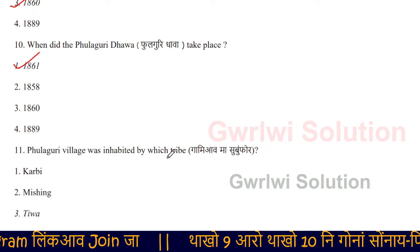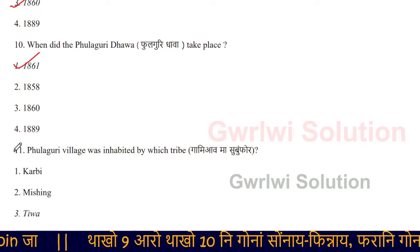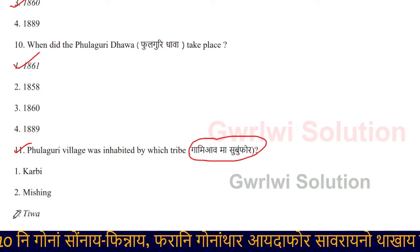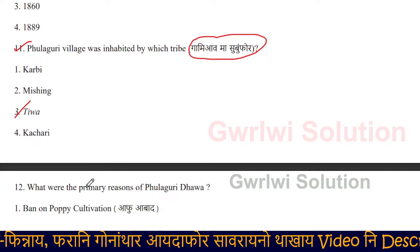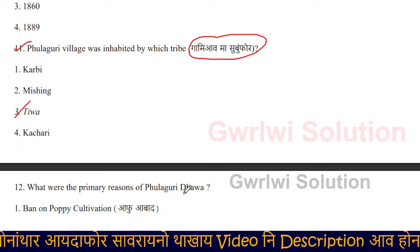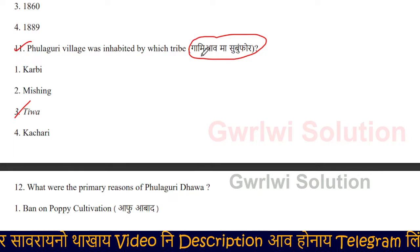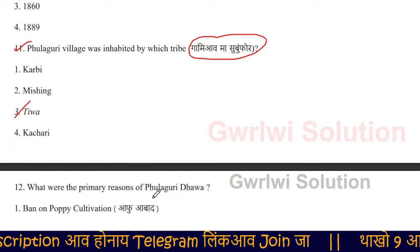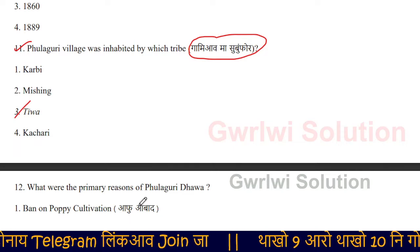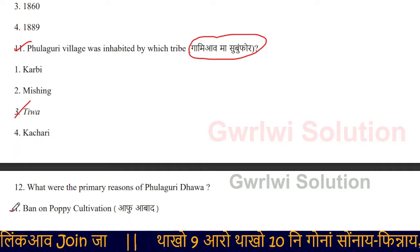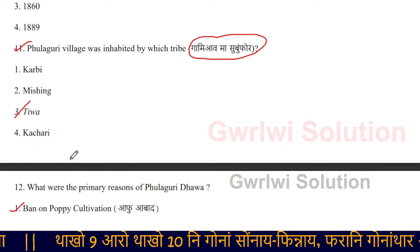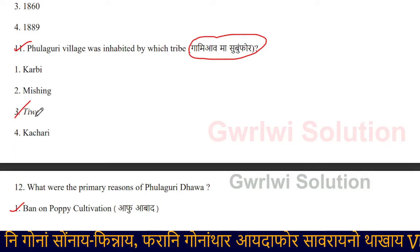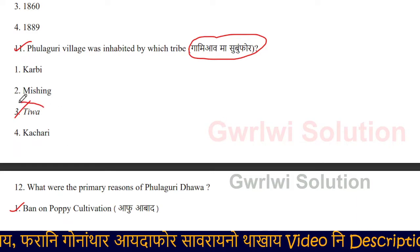In 1861, the Pulkuri village was inhabited by a witch tribe. What were the primary reasons for the Pulkuri uprising? The main reason was related to the city and the Guine community.